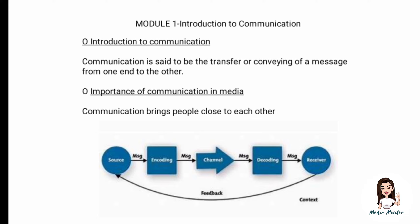After encoding a message, the source will think of a channel — a method through which he or she will convey the message to the receiver. This channel could be a newspaper, verbal communication, telephone, a letter, an email, a movie — anything of that sort.